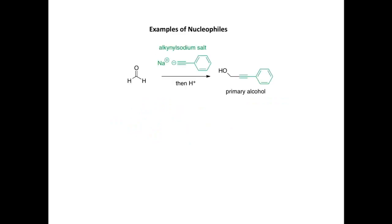In this example we're using an alkali sodium salt as our nucleophile. The negative charge here is directly on the carbon atom in the carbon-carbon triple bond. We're going to react that with methanal, and following protonation, following our classic nucleophilic addition mechanism, we form this primary alcohol here, and this is the carbon-carbon bond that we've formed.